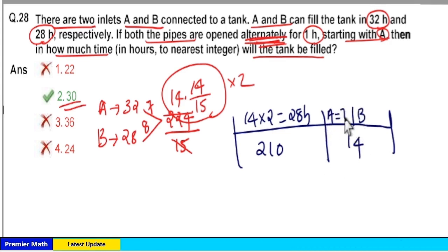So A fills 7 units in 1 hour and B fills remaining 7 units in less than 1 hour, because B can fill 8 units in 1 hour. So total time taken is 28 plus 1 plus less than 1 hour, that is less than 30 hours, or you can clearly say 29.8 hours.